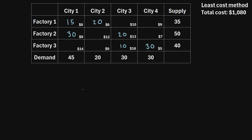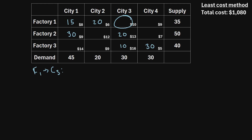Here's how the stepping stone method works. For each of the unallocated cells in this table, we're going to draw a closed loop using only vertical and horizontal lines, in which the vertices of the loop are only touching allocated cells. For example, consider this cell — it is an unallocated cell, meaning no goods are currently being shipped from factory one to city three. We start at this cell.